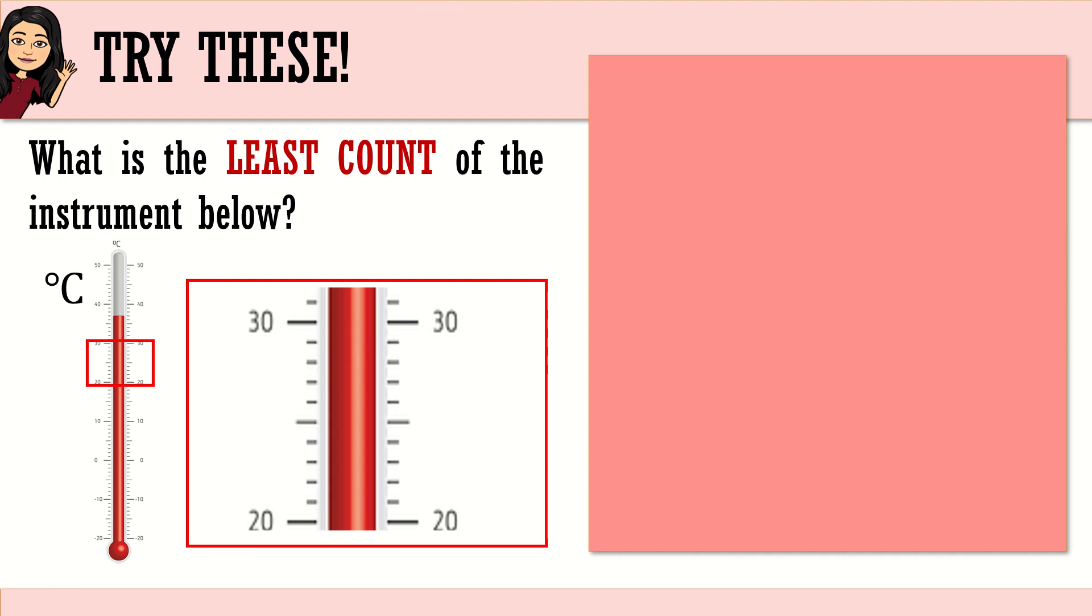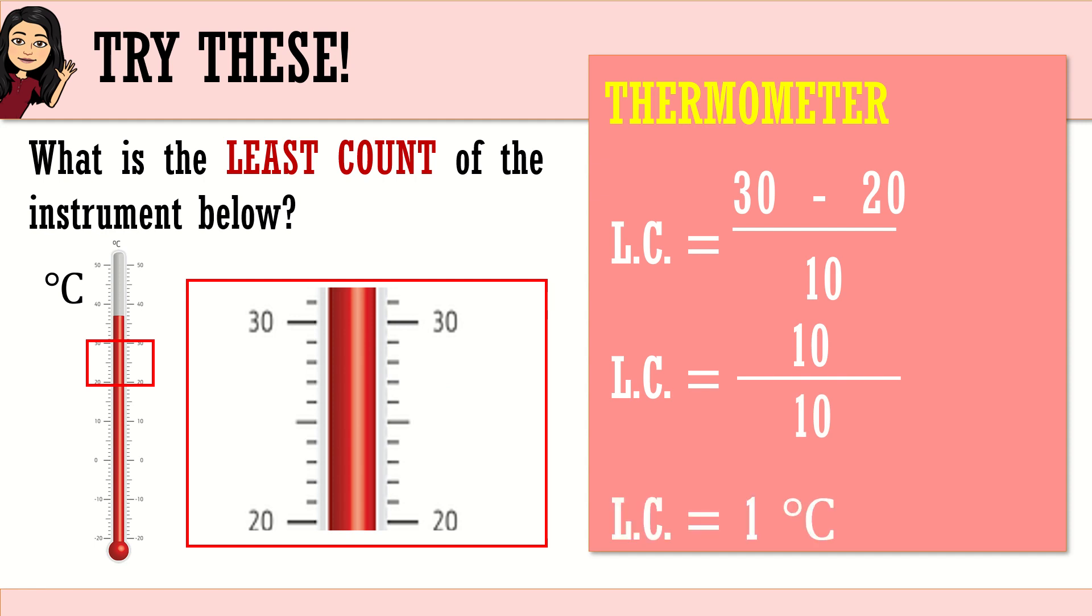This is a thermometer. The least count of this thermometer would give you 30 minus 20 because your start is 20 and your end is 30. There. Denominator is 10. That is the number of small divisions in between 20 and 30. Next is, we will now simplify the equation. Therefore, we have 30 minus 20. The difference is 10. Divided by, copy the denominator, 10. So the least count is 1 degrees Celsius as stated right here in your measuring tool. So the least count is 1 degree Celsius, meaning this thermometer has the capability of measuring accurately every 1 degree Celsius. Very good.